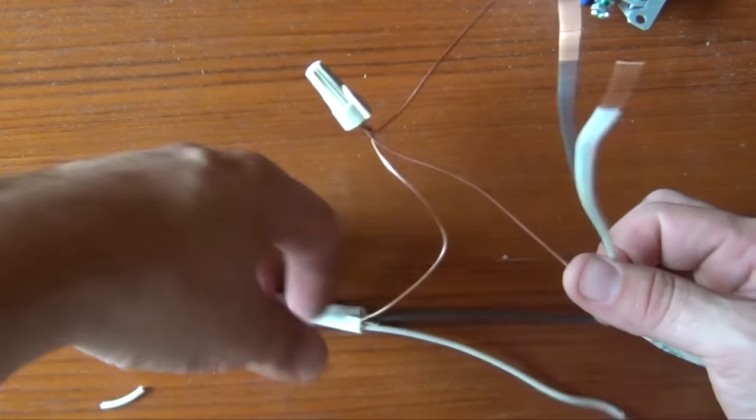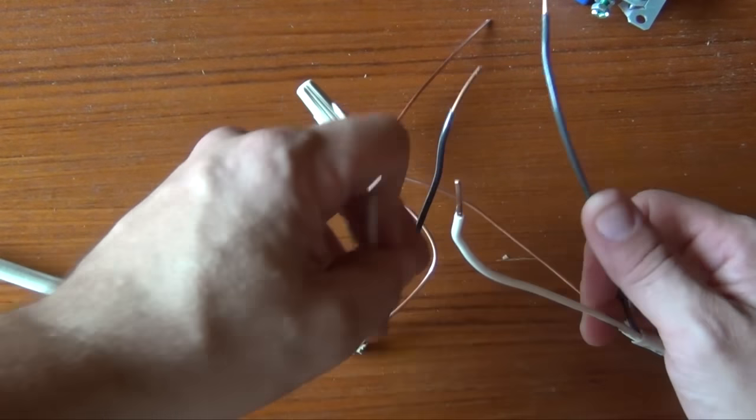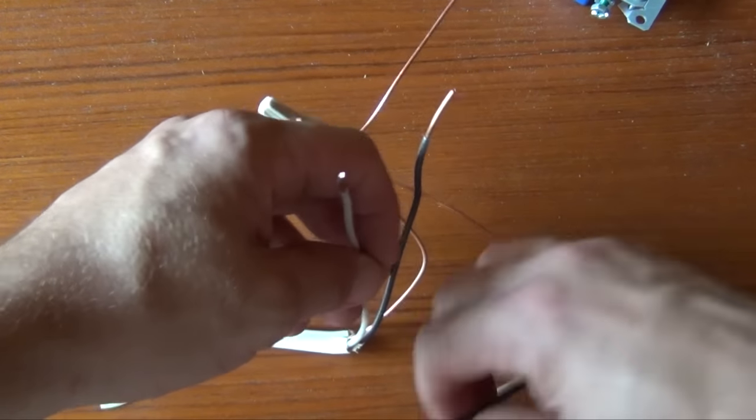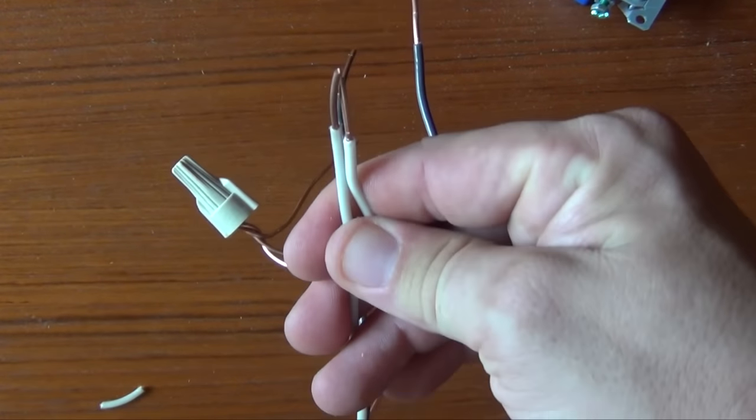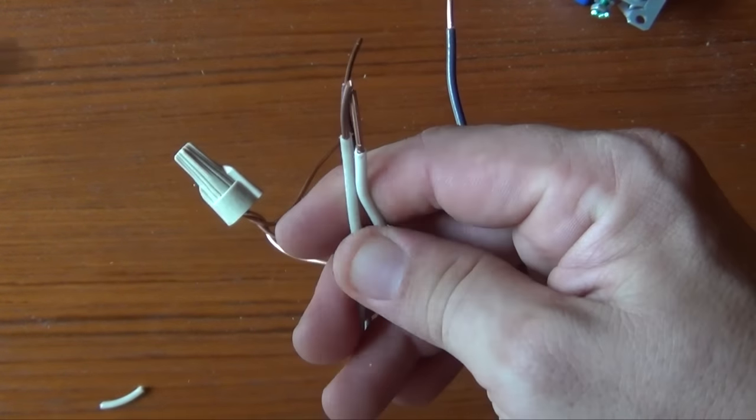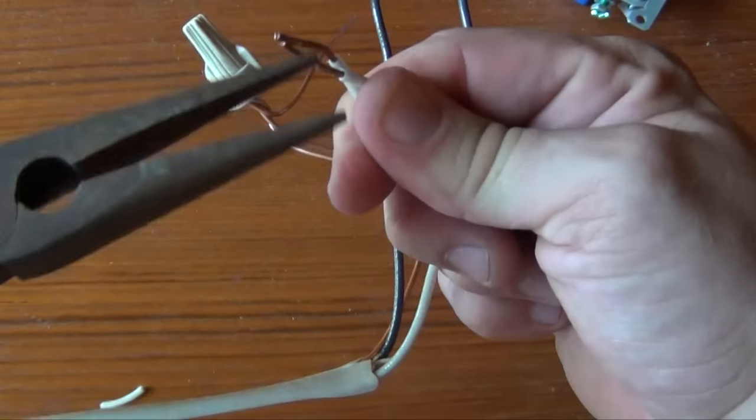Locate your two white neutral wires, twist together with a pair of pliers in a clockwise manner, and once you've finished twisting them together, apply another wire nut.